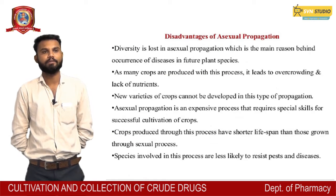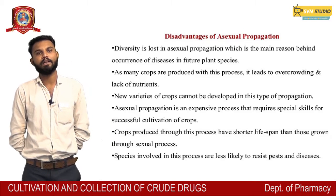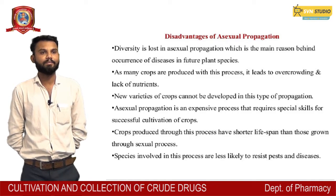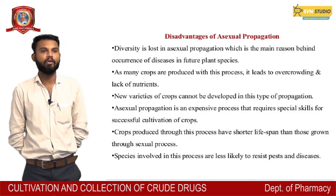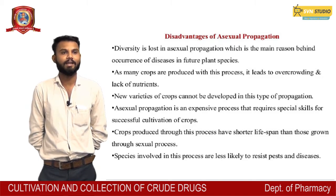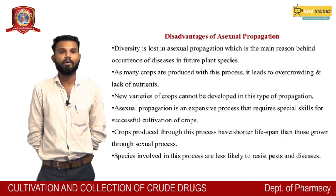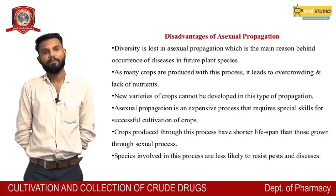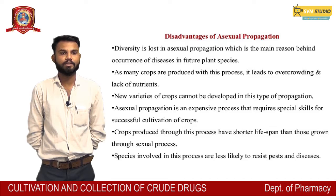Disadvantages of asexual propagation: Diversity is lost in asexual propagation, which is the main reason behind the occurrence of disease in future plant species. As many crops are produced through this process, it leads to overcrowding and lack of nutrients. New varieties of crops cannot be developed through this type of propagation. Asexual propagation is an expensive process requiring specialized skill. Crops produced have a shorter lifespan than those grown through sexual processes.